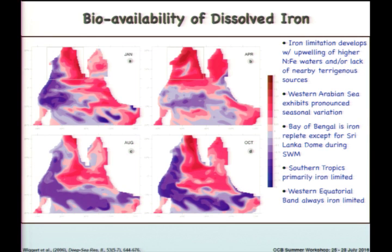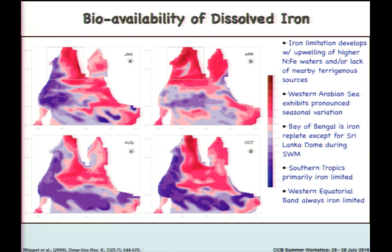This graphic shows what that model does in terms of contrasting: the red is iron replete and the dark blues indicate iron limitation in the model. We're running a basin model of the Indian Ocean with a coupled ecosystem. In the upwelling regions, especially during the summer monsoon, this feature is indicative of iron limitation being the driver on production. And pretty consistently across the southern Indian Ocean, the model indicates iron limitation.